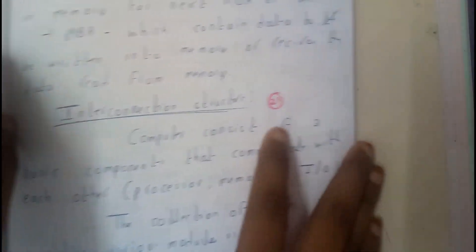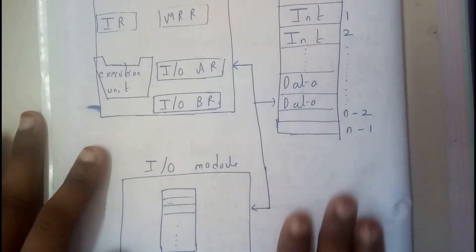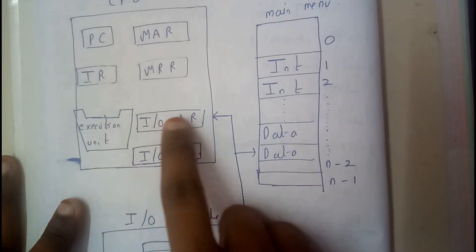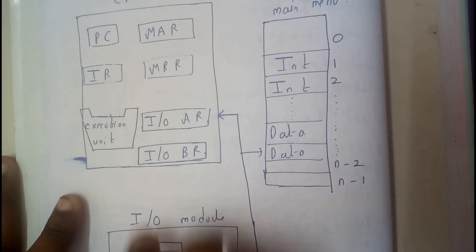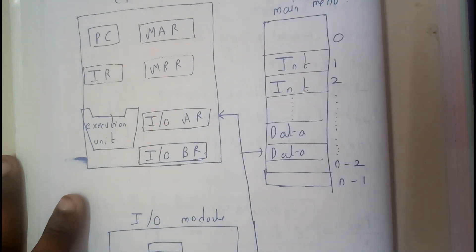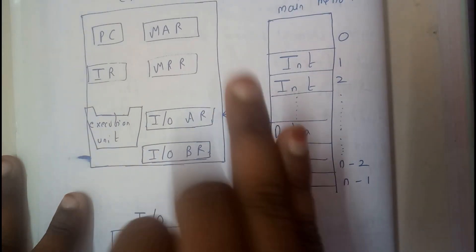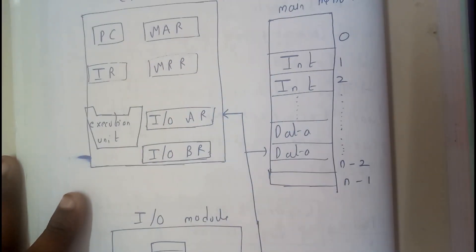Now you can just draw a block diagram for this. It consists of CPU, memory, and I/O module. These are the three most important components of a computer. We need CPU, input-output device, and memory. These are the 100% required things.